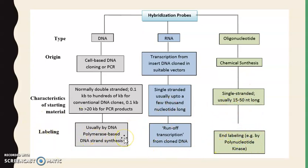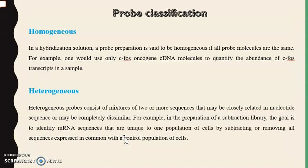This classification is based on the nature of the probe — whether it is DNA, RNA, or oligonucleotide. There is another classification depending on whether probes are homogeneous or heterogeneous. A probe preparation is said to be homogeneous when all probe molecules are the same. For example, if we want to detect the abundance of c-fos transcript in a sample, we use a probe targeting the c-fos oncogene cDNA molecules.